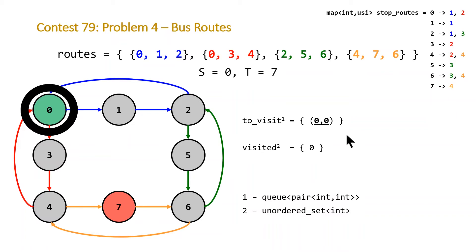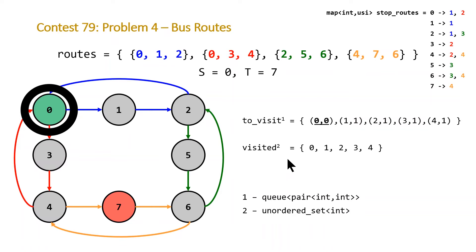We start by looking at stop 0, go to our adjacency list, and see that stop 0 is in the blue route and the red route. We loop through all the stops in the blue route and the red route and push those onto our queue. At the same time, we insert them into our visited unordered set. We're adding stop numbers 1, 2, 3, 4, and adding the bus count as 1 plus the current number of buses.